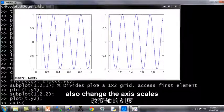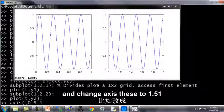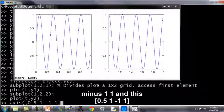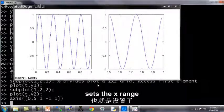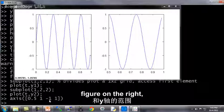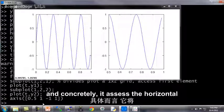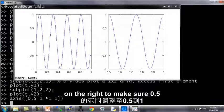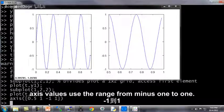And last command, you can also change the axis scales and change axes to 0.51, minus 1, 1. And this sets the x range and y range for the figure on the right. And concretely, it sets the horizontal range of values and figure on the right to range from 0.5 to 1. And the vertical axis values to range from minus 1 to 1.